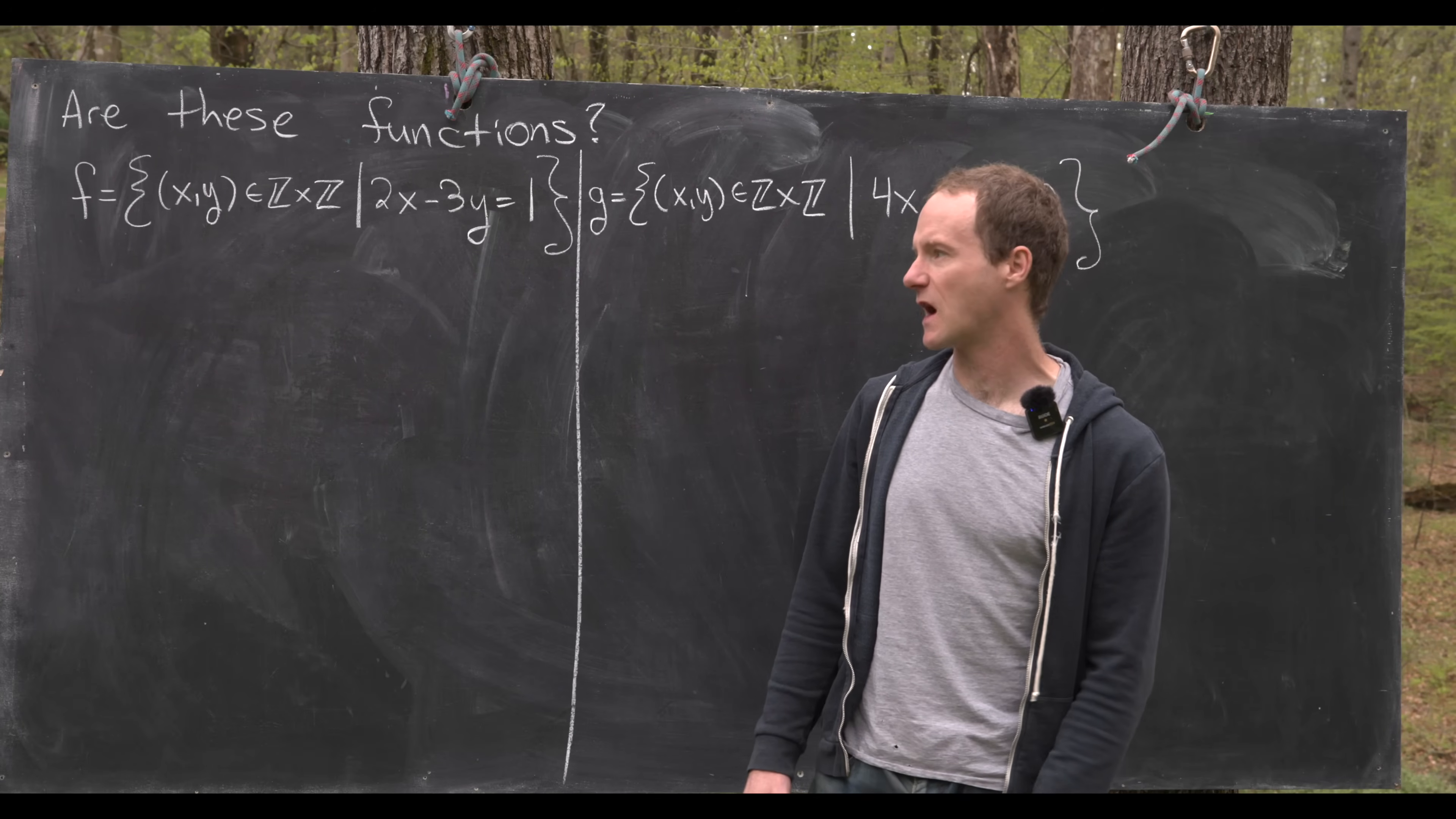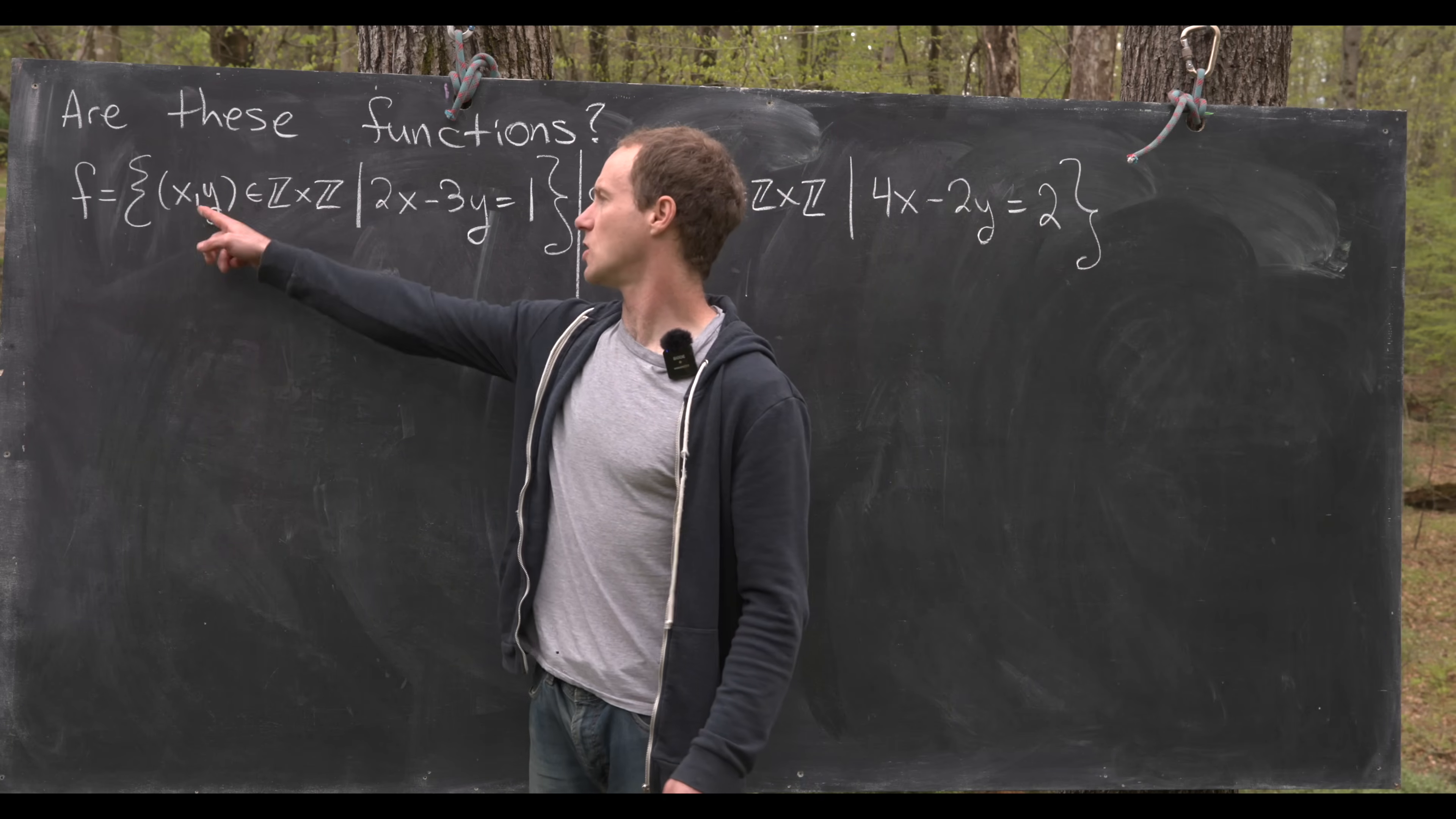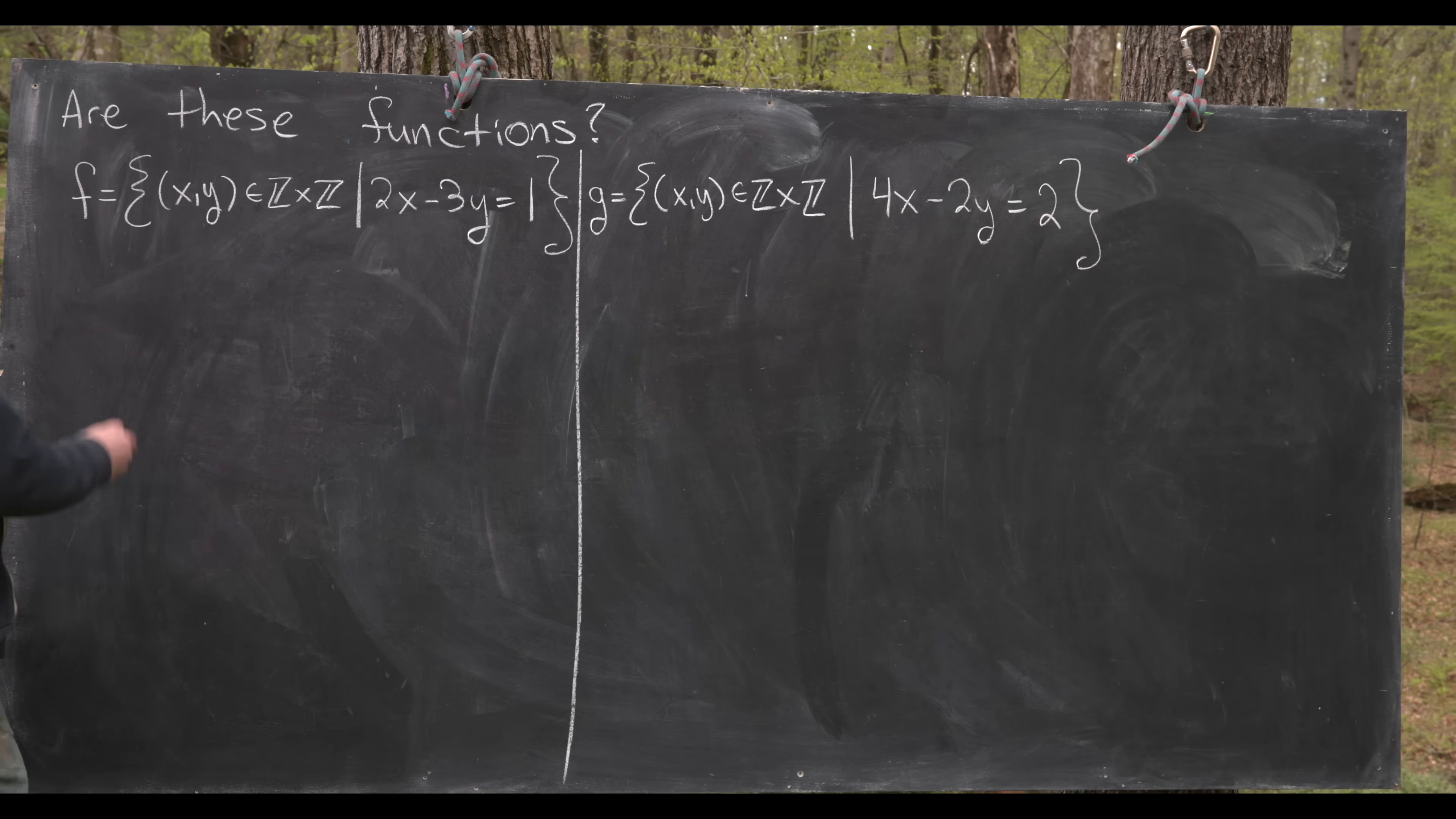The first two examples we look at would be functions from the integers to the integers, that is if they satisfy the requirements. So first off we're going to look at this subset f of Z cross Z defined as follows. So it's all ordered pairs (x,y) such that 2x-3y=1. So notice that definitely some things are in here. In other words it's not an empty set and that's because if we set x equal to for instance 2 and y equal to 1 then we're good to go because we have 2 times 2 minus 3 times 1 is obviously 1.